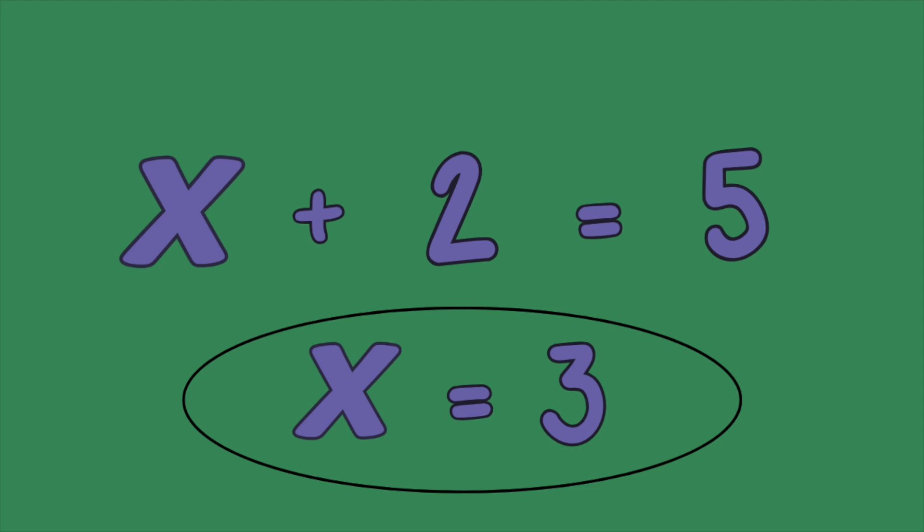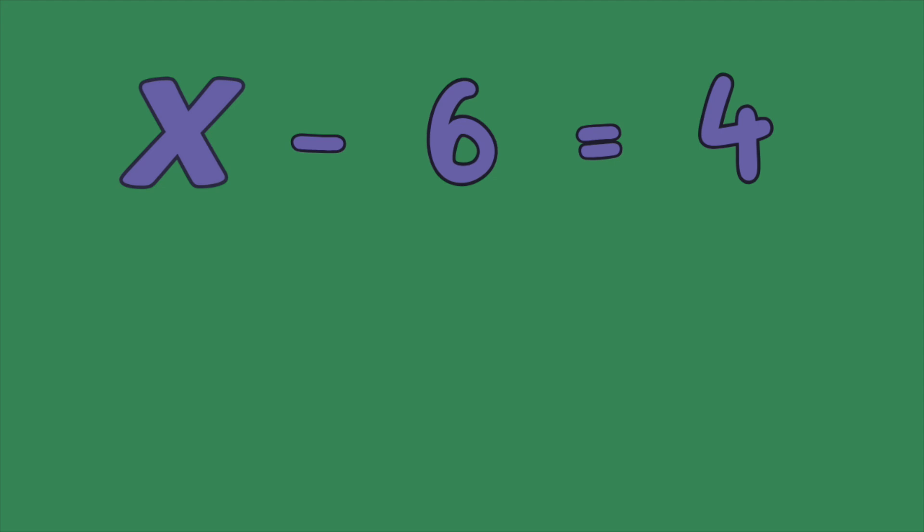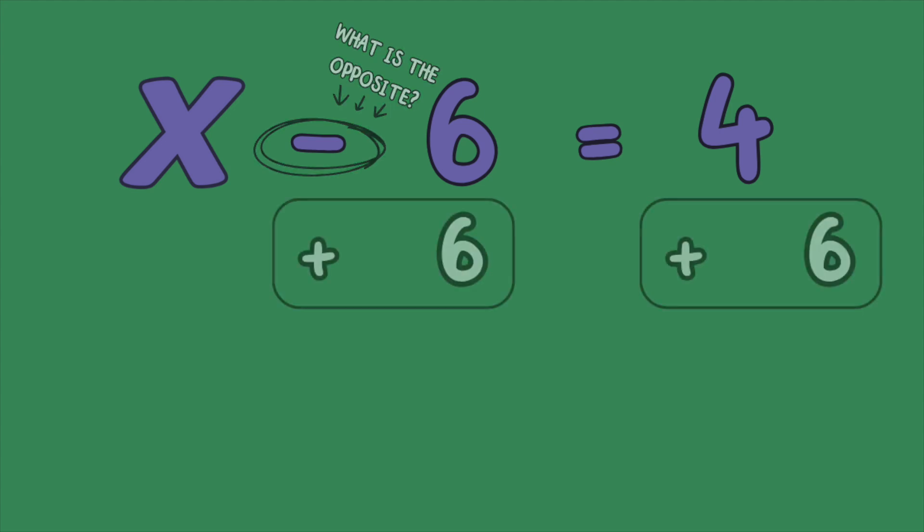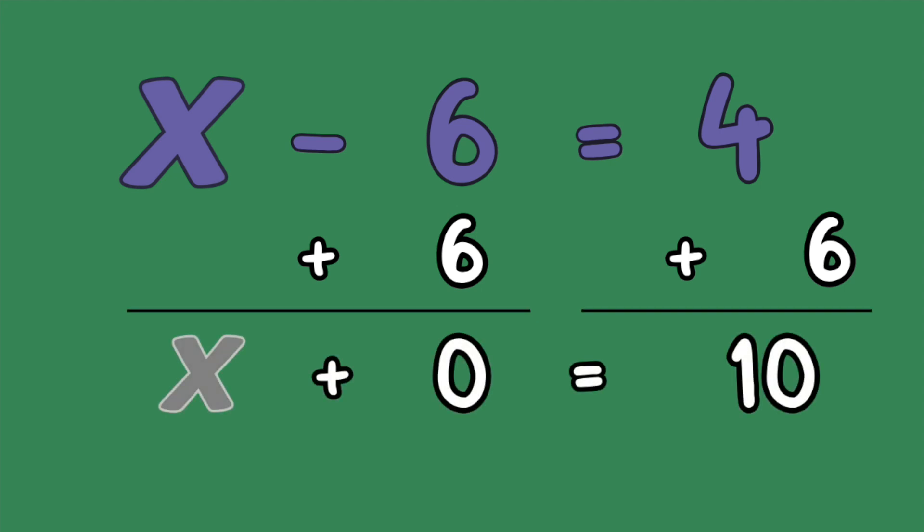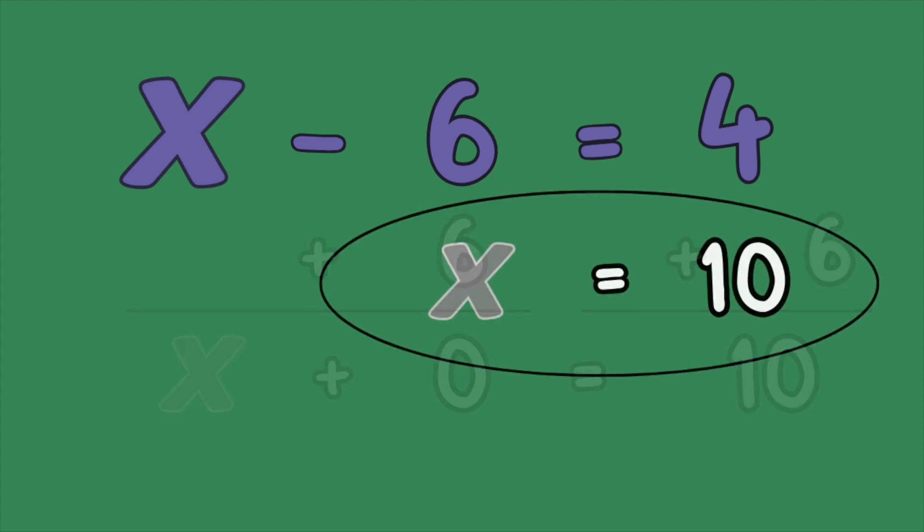Let's try more examples. x minus 6 equals 4. We need to find a number that, when we subtract 6, gives us 4. We need to do the opposite of subtracting 6. What's the opposite of subtracting? Let's add 6 to both sides. 4 plus 6 equals 10. So x equals 10, because 10 minus 6 equals 4.